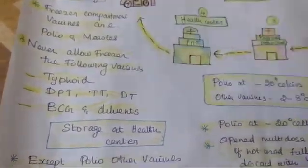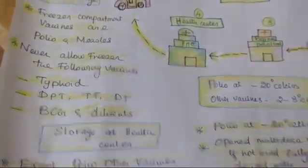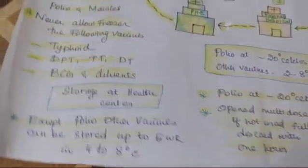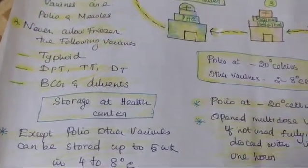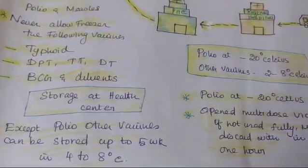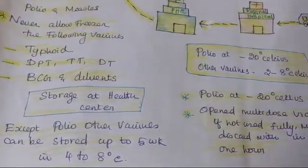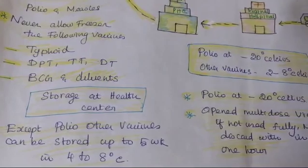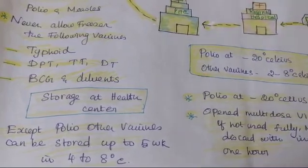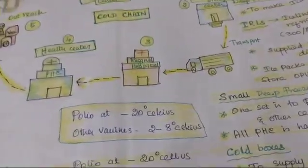What is called the storage center? In the storage center, except for polio vaccines, all vaccines are stored for up to 5 weeks. A temperature of nearly 4 to 8 degrees Celsius is maintained in the storage center.